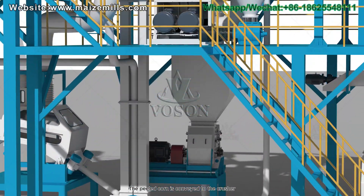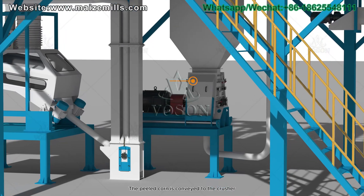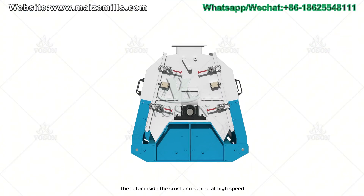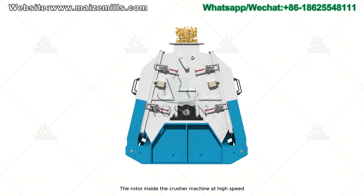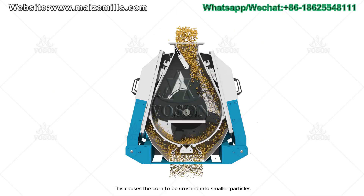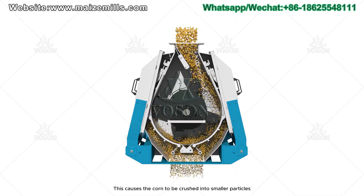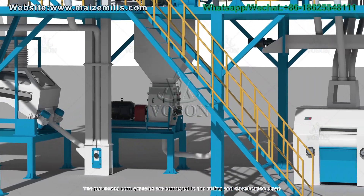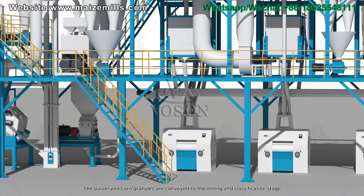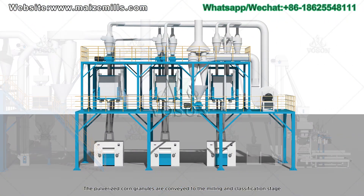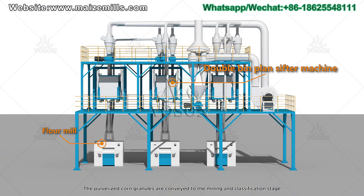The peeled corn is conveyed to the crusher. The rotor inside the crusher machine rotates at high speed, causing the corn to be crushed into smaller particles. The pulverized corn granules are conveyed to the milling and classification stage.